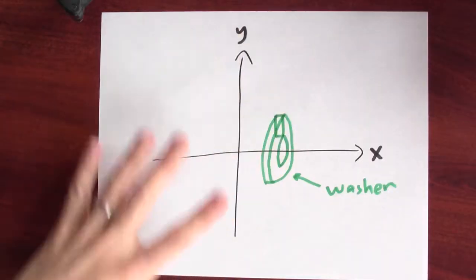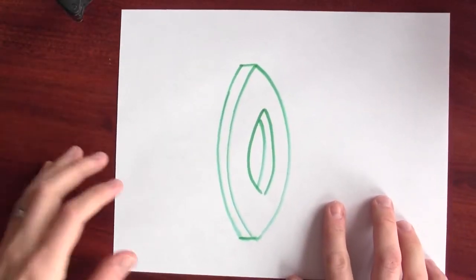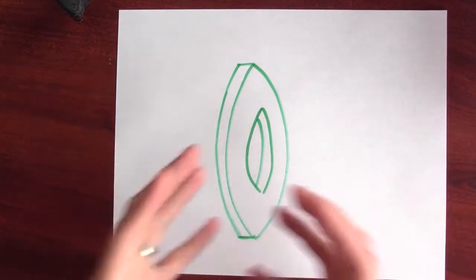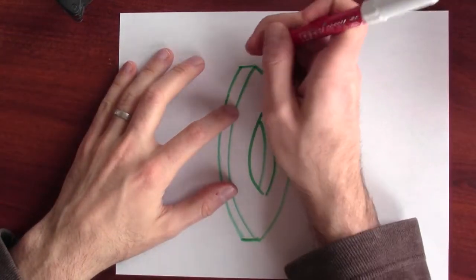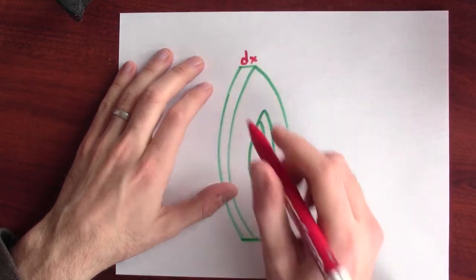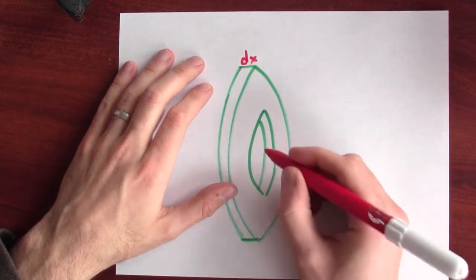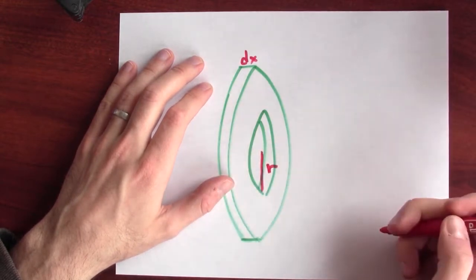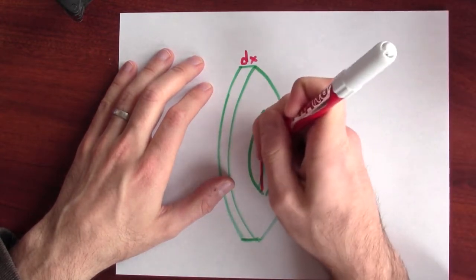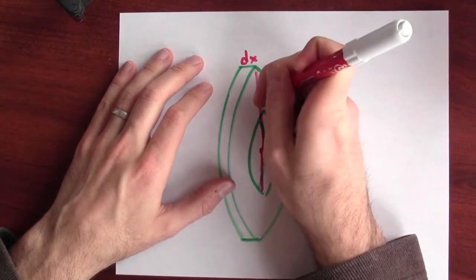What's the volume of a washer? Well, let me make this picture a little bit bigger. Here's a big picture of a washer. And what are the parts of a washer? Well, a washer's got a thickness, which I'm imagining to be pretty thin. So I'm going to call that dx. It's got a small radius, which I'll call little r, and then it's got a big radius, which I'll call big R.